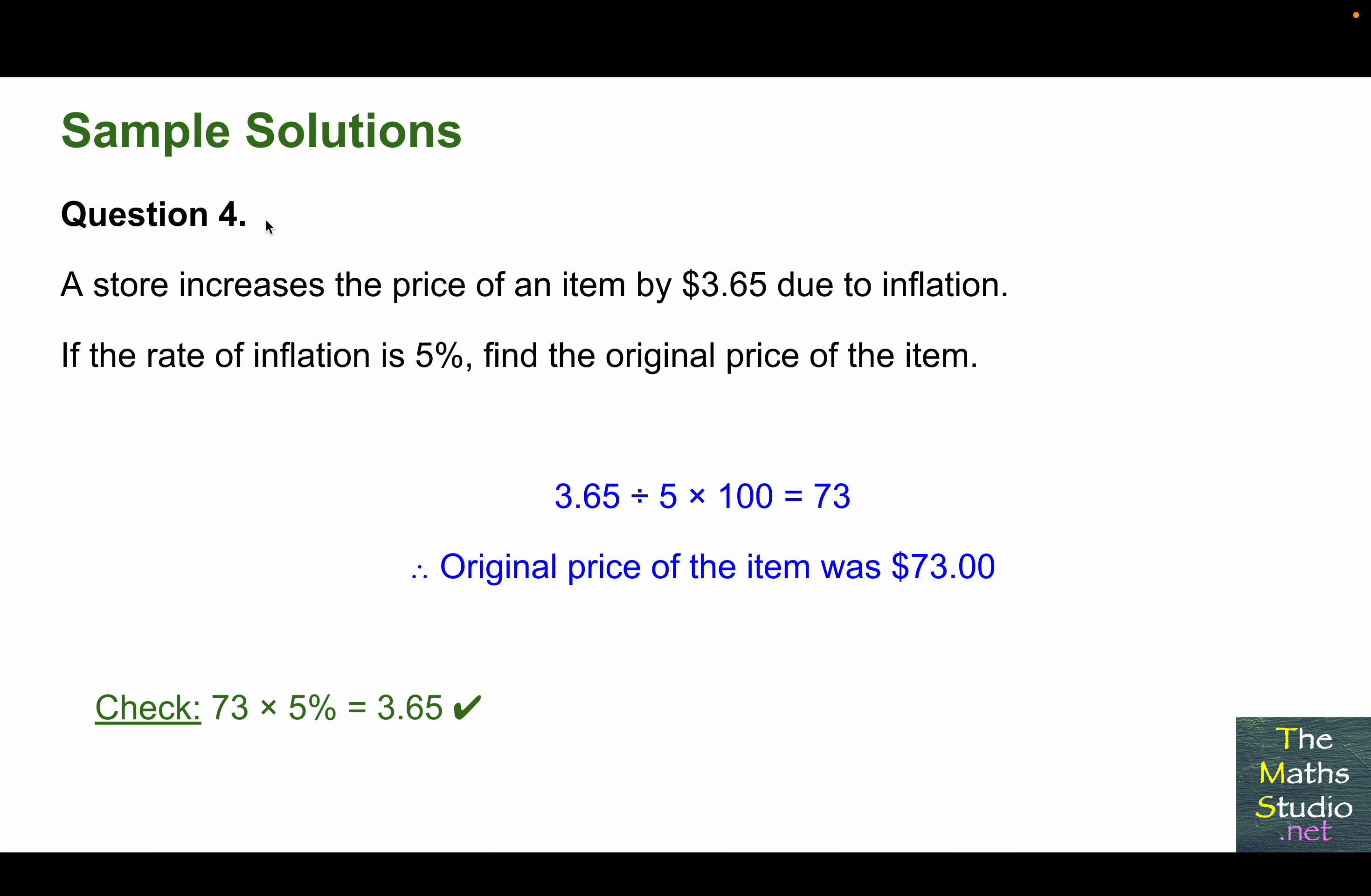And for question 4, a store increases the price of an item by $3.65 due to inflation. If the rate of inflation is 5%, find the original price of the item. So starting off with 3.65, dividing that by 5, multiplying that by 100, and we get 73. Therefore, the original price of the item was $73.